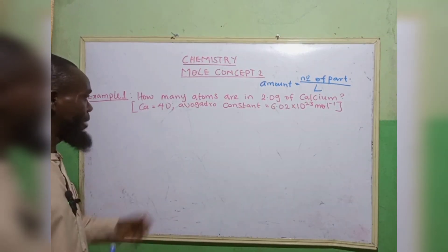Number one: how many atoms are in 2.0 grams of calcium? Let's write out our parameters. How many atoms — atoms refers to the number of particles — so number of particles is unknown. Anything in grams means mass, so the mass of calcium is 2.0 grams.